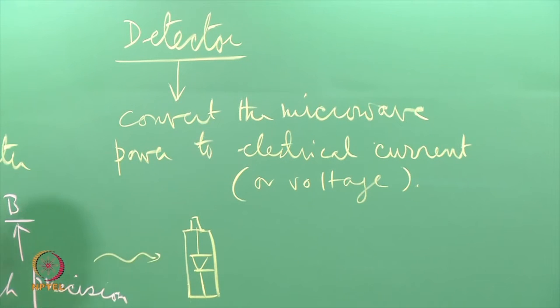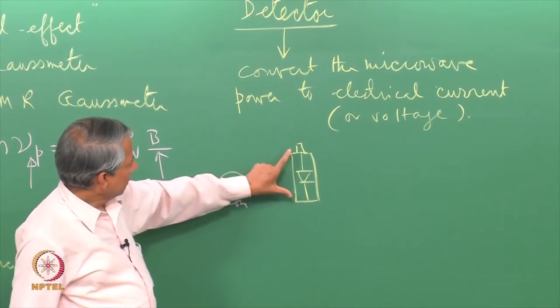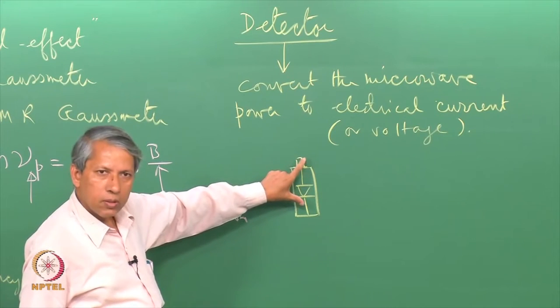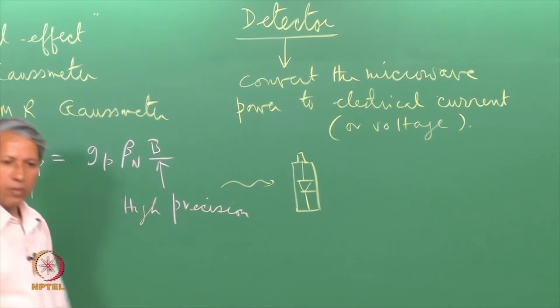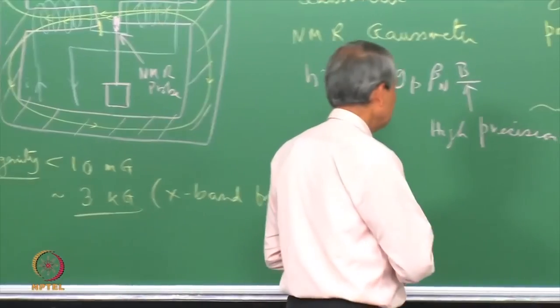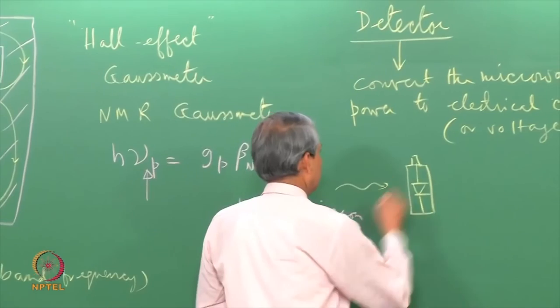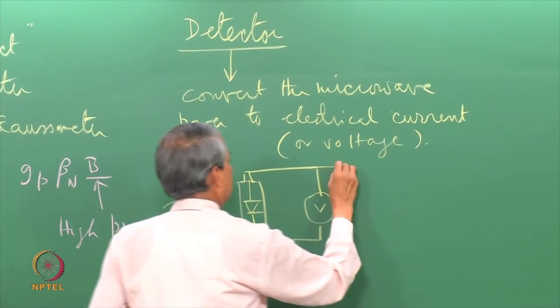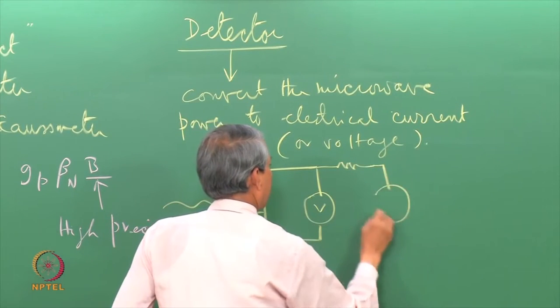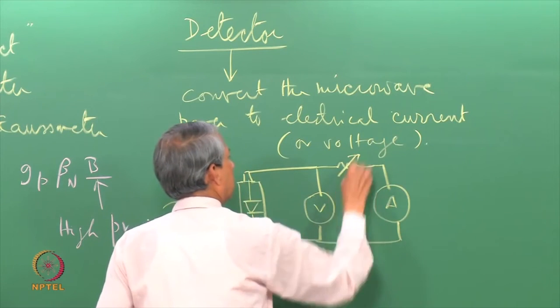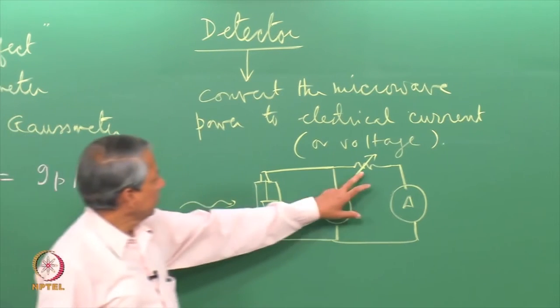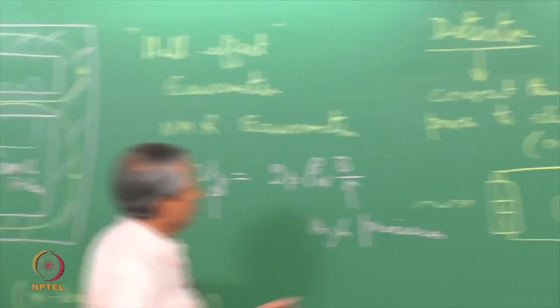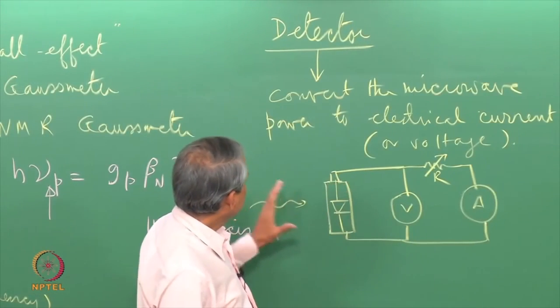When radiation falls on this one, this looks at the electric field of the microwave and current is produced which is related to the intensity of the microwave. Here I can put a voltmeter and put a resistance and current meter. This resistance could be varied. By adjusting the variable resistance I can vary the current. This is a simple detector.